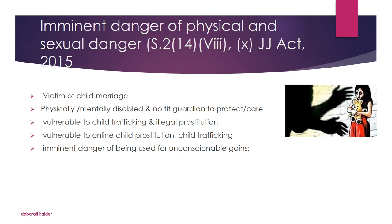Also included are children in imminent danger of being used for unconscionable gains. For example, if a physically or mentally challenged child cannot speak or express what is happening, the so-called caretaker may leave the child with a third person who exploits the child or uses them for illegal activities. From this vicious connection, the parents, guardians, or caretakers of such children are gaining illegal profit. These children can also be considered as children in need of care and protection under the category of those in imminent danger of physical and sexual abuse.